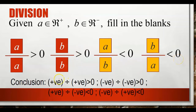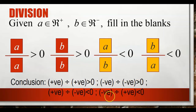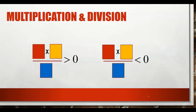Conclusion for division: positive divided by positive is greater than 0; negative divided by negative is greater than 0; positive divided by negative is less than 0; and negative divided by positive is also less than 0.